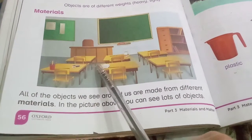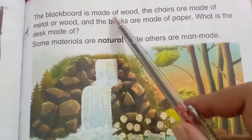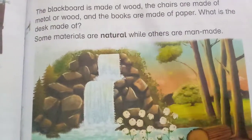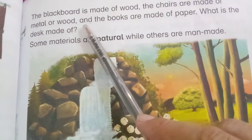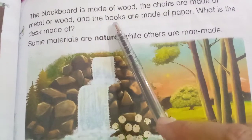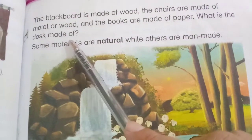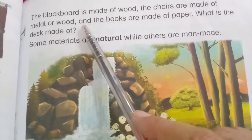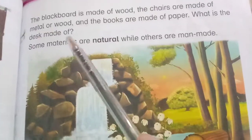The objects we see — the blackboard is made of wood. The chairs are made of metal or wood. The books are made of paper. What is the desk made of? The desk is made of wood.